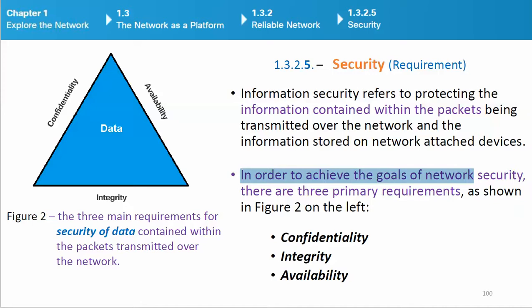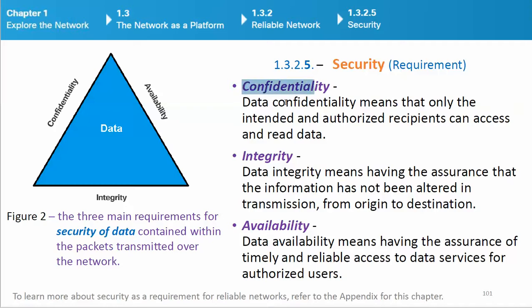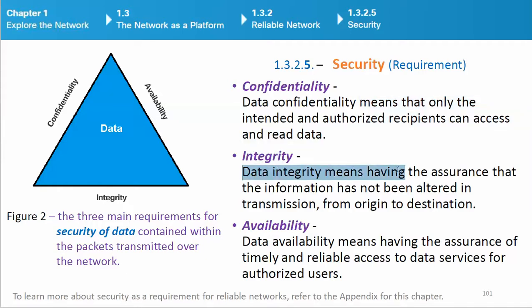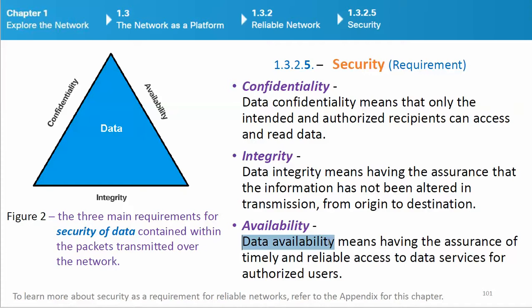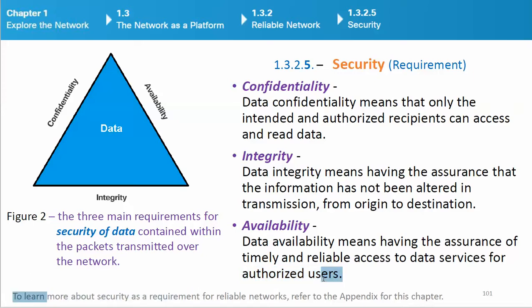Confidentiality means that only the intended and authorized recipients can access and read data. Integrity means having the assurance that the information has not been altered in transmission from origin to destination. Availability means having the assurance of timely and reliable access to data services for authorized users.